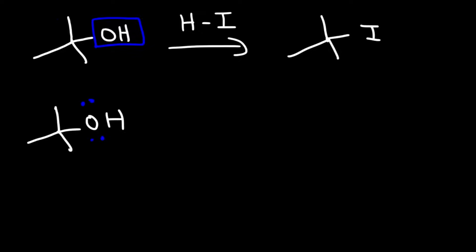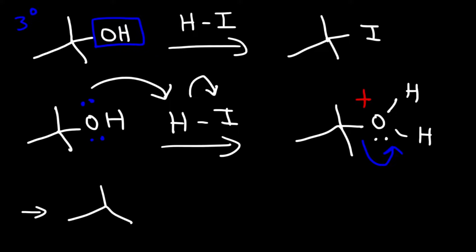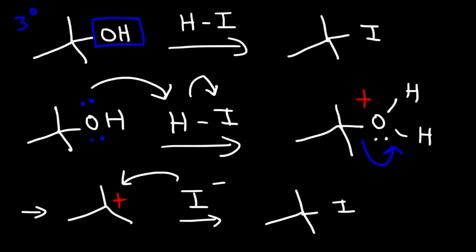Because we have a tertiary alcohol, this reaction will proceed by the SN1 mechanism. The first step is protonation to convert the hydroxyl group into a good leaving group. The iodide ion won't attack directly in an SN2 fashion — the methyl groups prevent access. Instead, the leaving group departs to give a tertiary carbocation intermediate, and then the iodide ion combines with the carbocation to give the alkyl halide product.